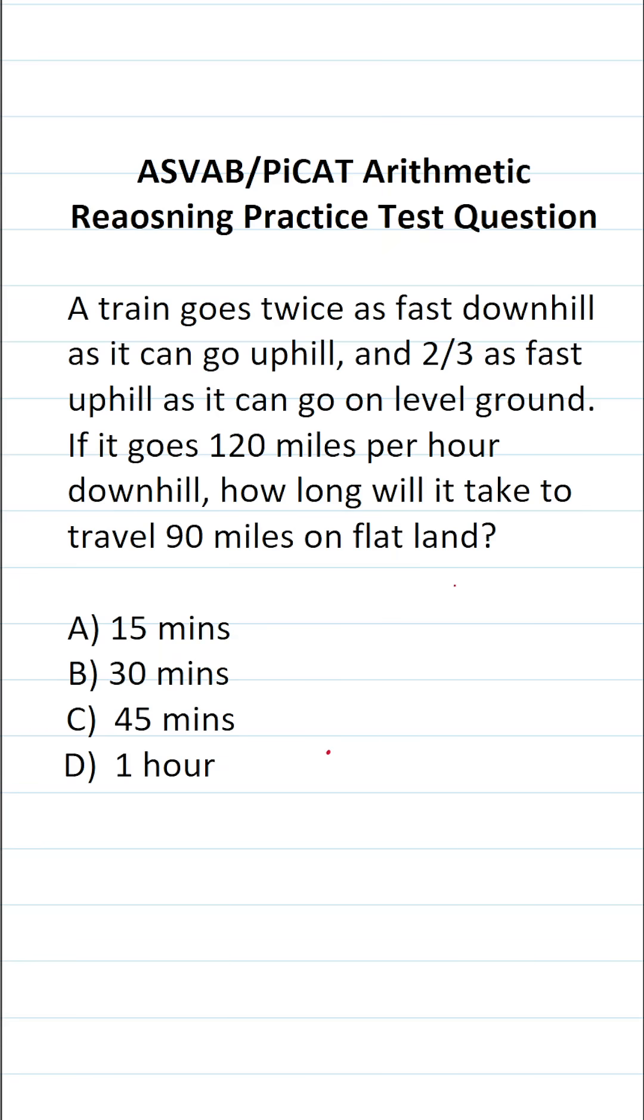This arithmetic reasoning practice test question for the ASVAB and PICAT says a train goes twice as fast downhill as it can go uphill and two-thirds as fast uphill as it can go on level ground. If it goes 120 miles per hour downhill, how long will it take to travel 90 miles on flat land?